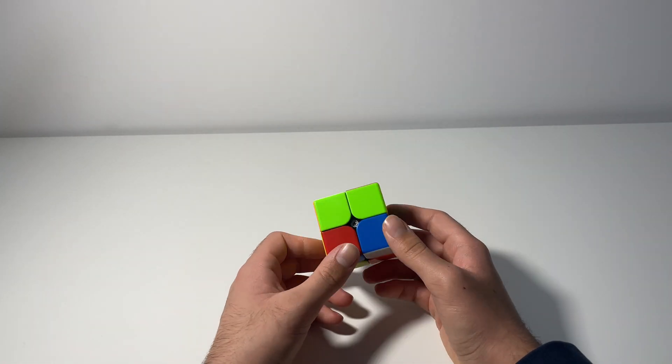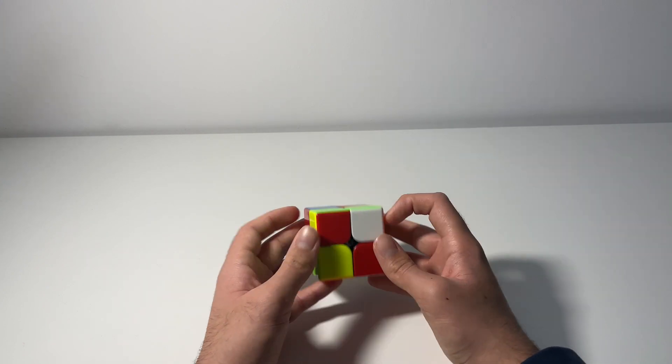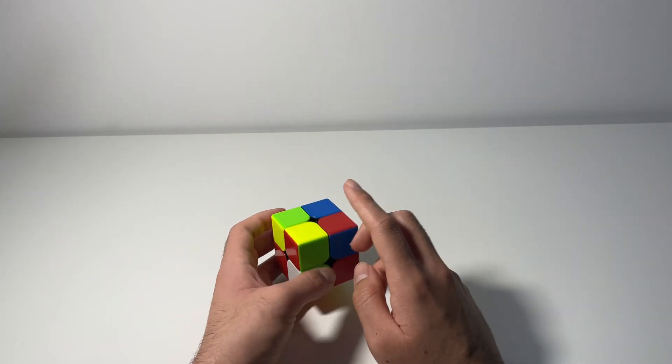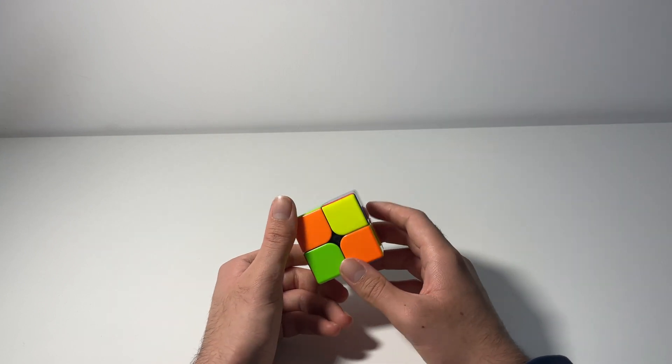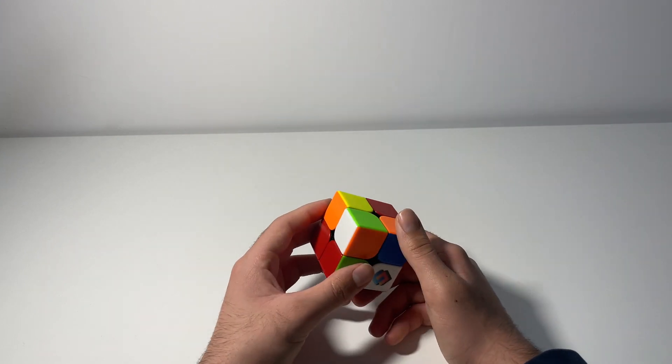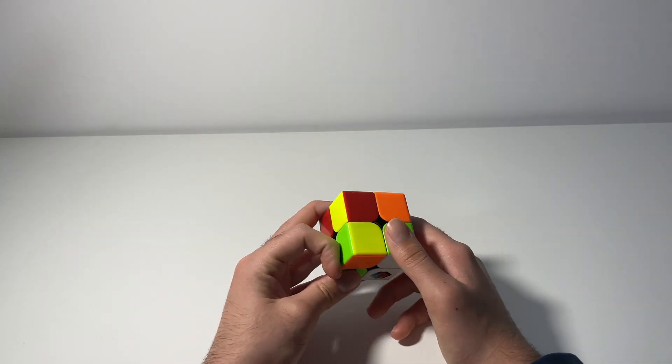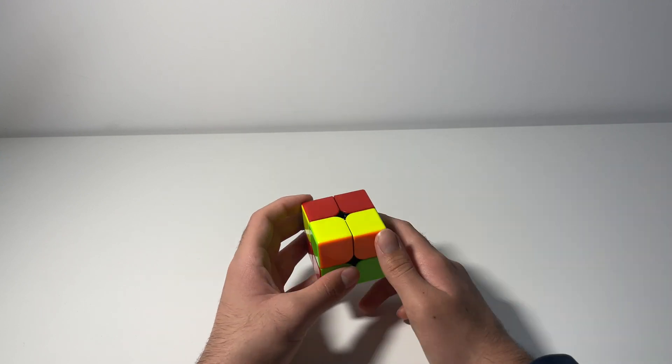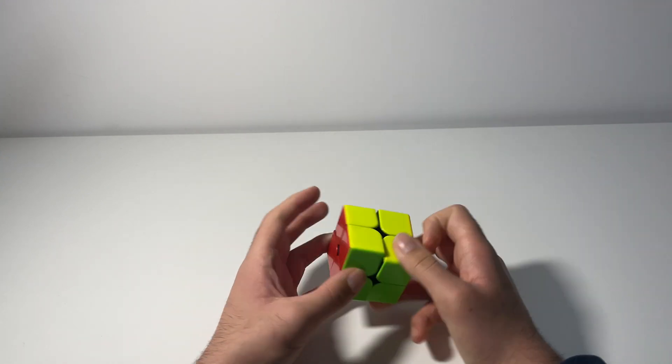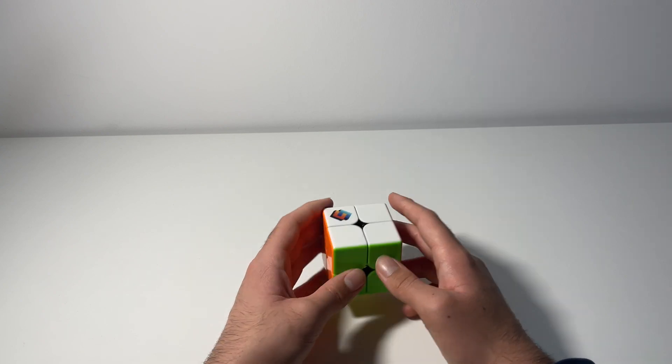Another solution that I could have done was a white CLL layer. So, I would solve, so I could have solved this corner into the back, like so. And solved this here, like so. And then I would have gotten this CLL with no AUF. That's probably objectively better.